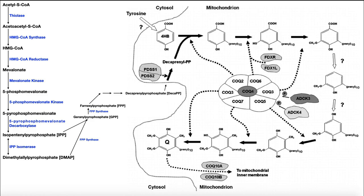Coenzyme Q is a coenzyme that is absolutely necessary in the electron transport chain in humans and many other organisms. So any cell that utilizes an electron transport chain has an absolute dependency on coenzyme Q. We get some coenzyme Q from the diet, but it's too important to not have a biosynthetic pathway for it.